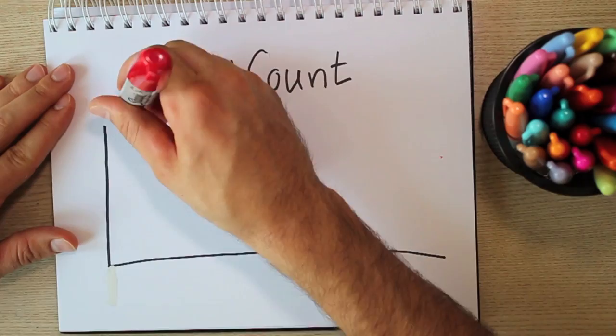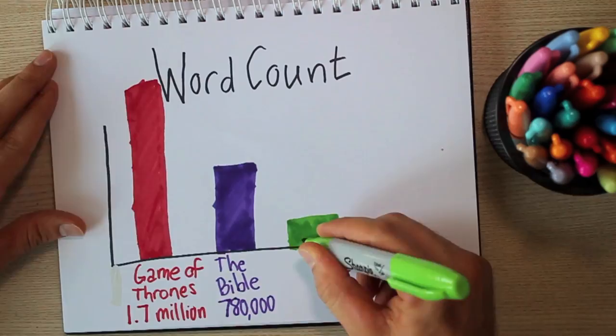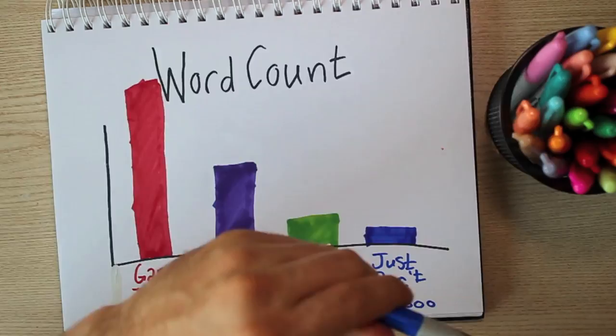Now, these books all taken together have a total word count of 1.7 million. Just to give you a comparison, there are 700,000 words in the entire Bible, and the dictionary only lists 170,000 total words.